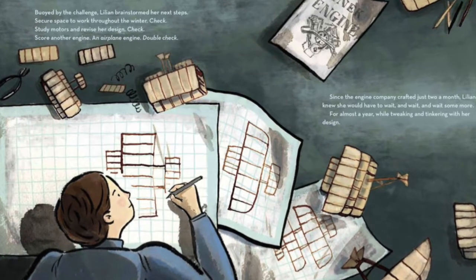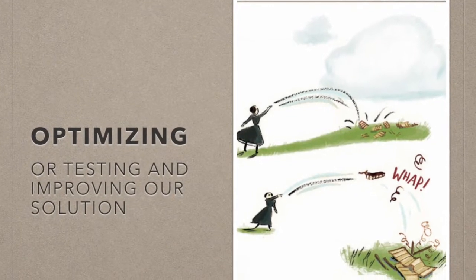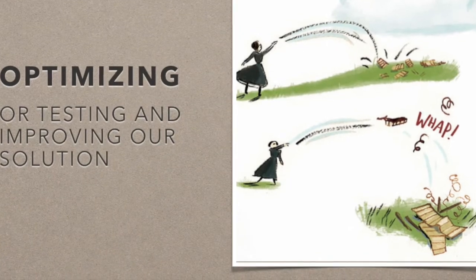So when we're developing solutions, we may draw pictures, we may build models, and then we have to test them. This is a picture of Lillian Todd and her tests. How do you think her first tests are going? Pretty terrible, but that's okay. This is a part of the engineering process. Nobody gets things right the very first time — not even Lillian Todd when she's trying to invent her airplane in the early 1900s. But each test gives her information that she can use to refine her design.